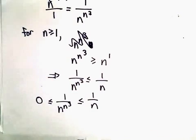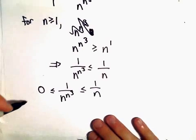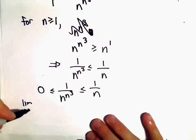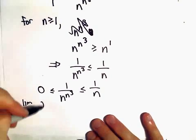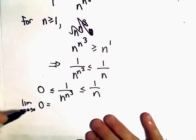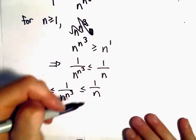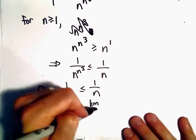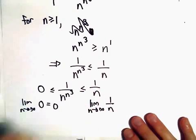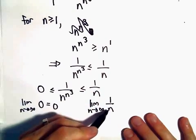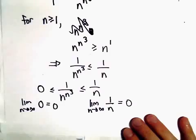So now we can bring in our squeeze theorem, and we can simply look at the limit as n goes to infinity of the left side, which is 0. Well, that limit certainly is 0. Likewise, if we look at the limit as n goes to infinity of the right side, the limit as n goes to infinity of 1 over n is also definitely 0.